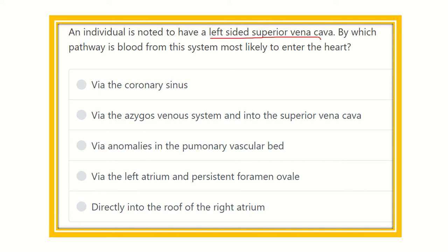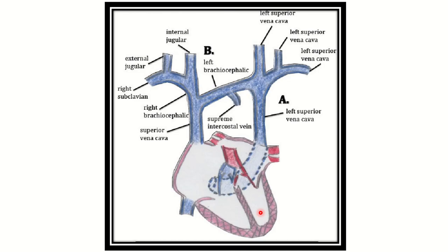We know that the superior vena cava is normally present on the right side, and other structures such as the aorta are located on the left side. But in this case, the superior vena cava is left-sided. Normally, blood from the superior vena cava drains into the right atrium. The options are: via the coronary sinus, via the azygous venous system into the superior vena cava, via anomalies in the pulmonary vascular bed, via the left atrium and persistent foramen ovale, or directly into the roof of the right atrium.